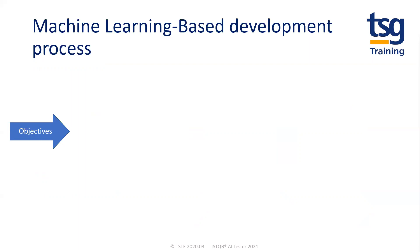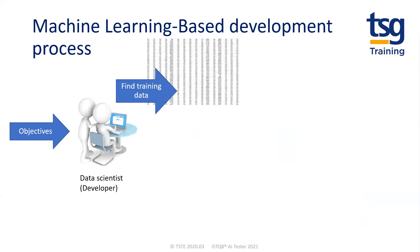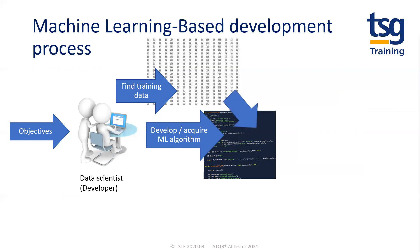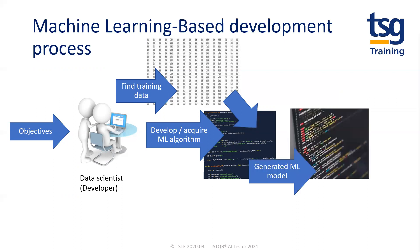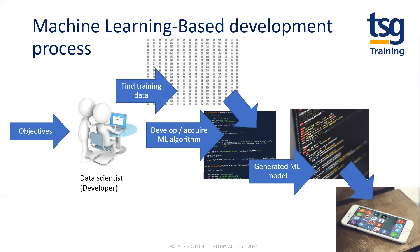For a machine learning-based development process, you still start with requirements, but think of these more as machine learning-based objectives. At a high level, the data scientist gathers training data and writes or acquires a machine learning algorithm. The training data is fed to the machine learning algorithm, which uses it to create a machine learning model that predicts the right response given the data it's been trained on. This automatically generated model is then deployed to the target system. The important point is that the deployed machine learning model code is not written by a developer — it's generated by the machine learning algorithm.